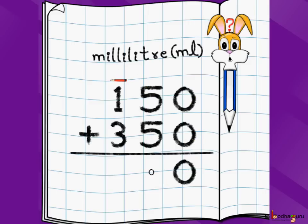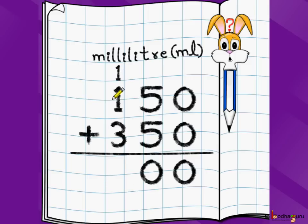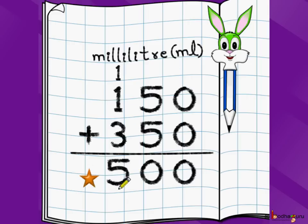5 plus 5 is 10, so 1 is carried over to its left neighbor. So 1 plus 1 is 2, then 2 plus 3 is 5. So the answer is 500 milliliters. Both numbers were in milliliters, so the answer is also in milliliters.